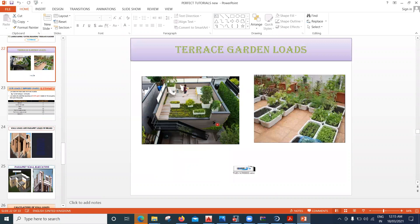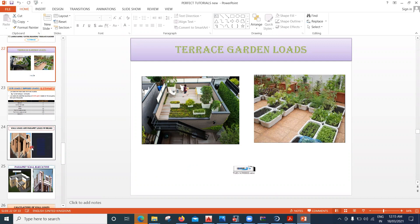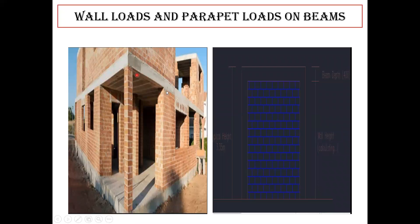In the terrace portion we consider terrace garden loads, waterproofing load, and water tank load. If there is a lift portion, we consider lift load too. For wall and parapet loads on beams: over a beam there is brickwork of certain density and height, which transfers load to the beam as a UDL — uniform distributed load — applied as frame loads in kilonewtons per meter.